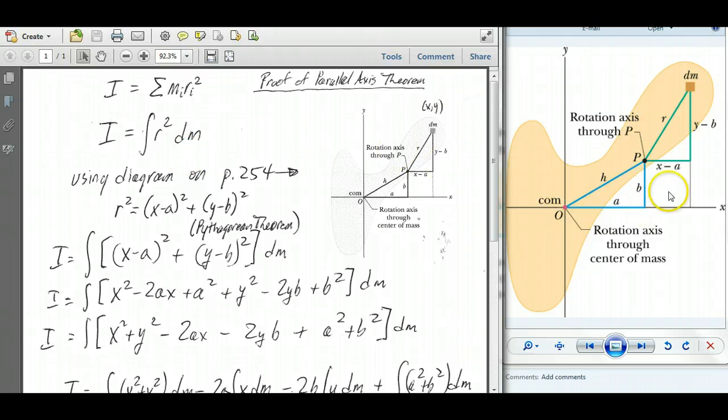Now, if we look at this diagram over here, we see that dm is located at coordinate x, y.